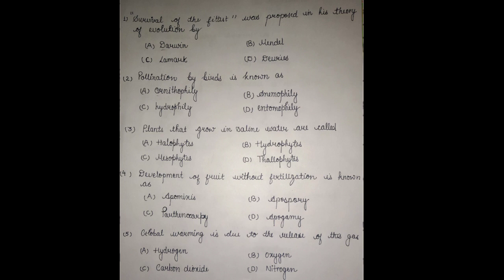Third question: plants that grow in saline water are called — Option A: halophytes, Option B: hydrophytes, Option C: mesophytes, and Option D: telophytes. The answer is halophytes. Plants growing in saline, that is salty, water are called halophytes.